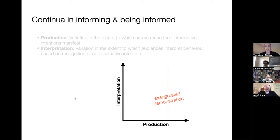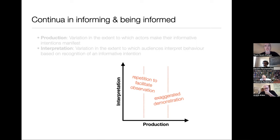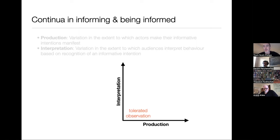So where do we place exaggerated demonstration in the framework? They make their informative intentions somewhat manifest, but not to the same degree as when they're verbally talking about it or pointing at it. On the interpretation side, how much does the audience interpret their behavior having recognized that they are exaggerating? That depends on the learner. In some cases: 'that's what I need to be paying attention to' — it's high. In other cases: 'I knew that already' — and it'll be lower. It varies on a case-by-case basis. Another thing they do very obviously is repetition. If you look at ethnographies of teaching, this is a very common thing — teachers or masters repeat the behavior to be learned over and over, without necessarily providing explicit instruction or exaggeration.